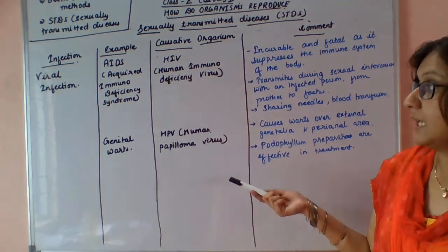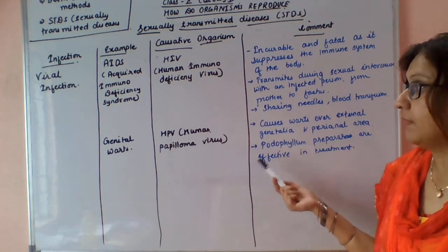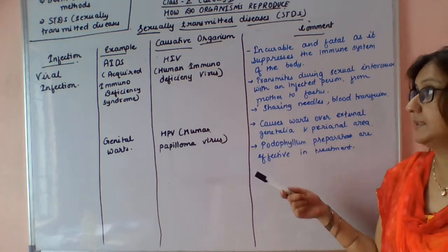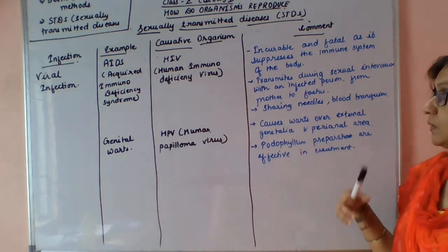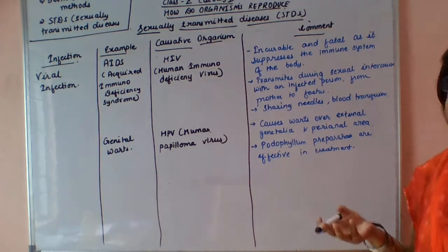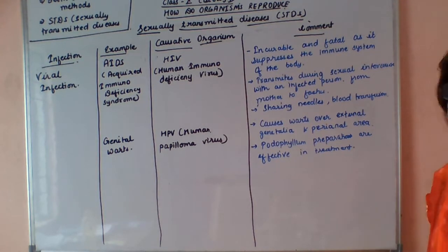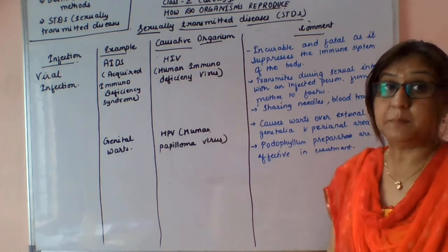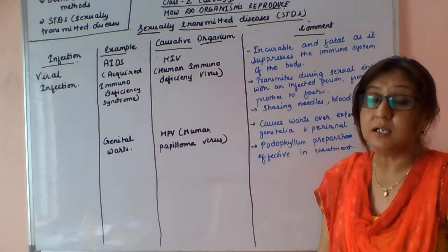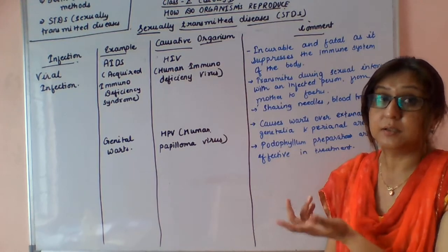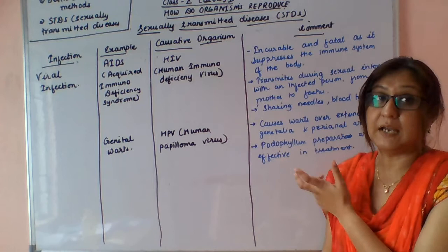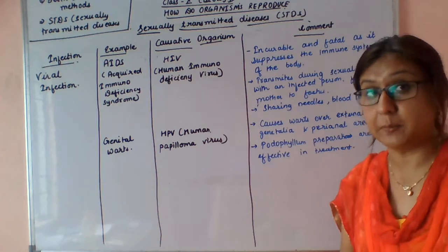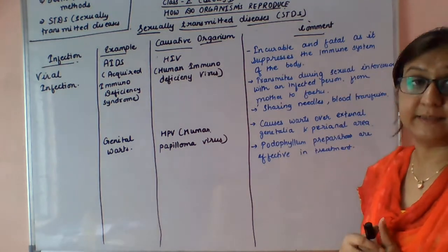Another viral STD is genital warts. The causative organism is HPV — Human Papilloma Virus. It causes warts over the external genitalia and perineal area. Podophyllum preparations are effective in treatment. Podophyllum is a plant whose roots and underground stem are used for medicinal purposes.